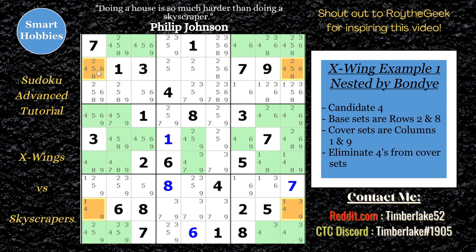This means we can eliminate all the other candidate 4s from these columns. This is called the base set — the rows that contain the 4s — and then you have the cover set, which is where you can eliminate all of the 4s. There are only two in the base set; the ones with more than two, you can start eliminating. Once you've exhausted the seven most popular strategies to solve a Sudoku puzzle and you're still stuck, this is the next strategy to look for. X-Wings are pretty common in more advanced puzzles, and once you know what to look for, they're pretty quick to spot and solve.